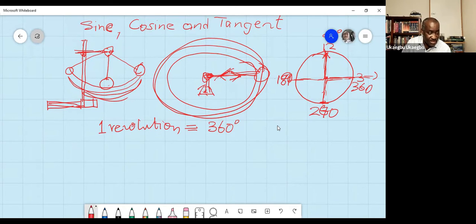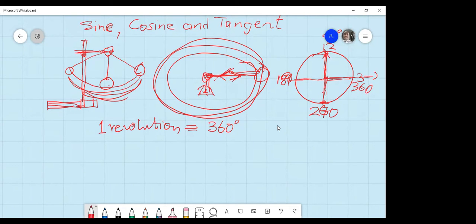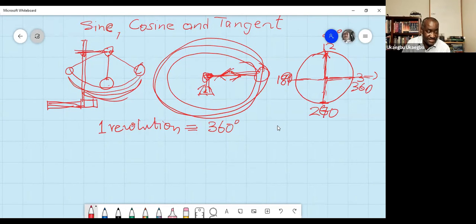So at each position, it will cover a certain degree at each position. So at this position, you can say this is 90 degrees with respect to the x-axis, and this will be 180 degrees right here. And then this will be something like 270 degrees. And when it goes round, it covers 360 degrees.